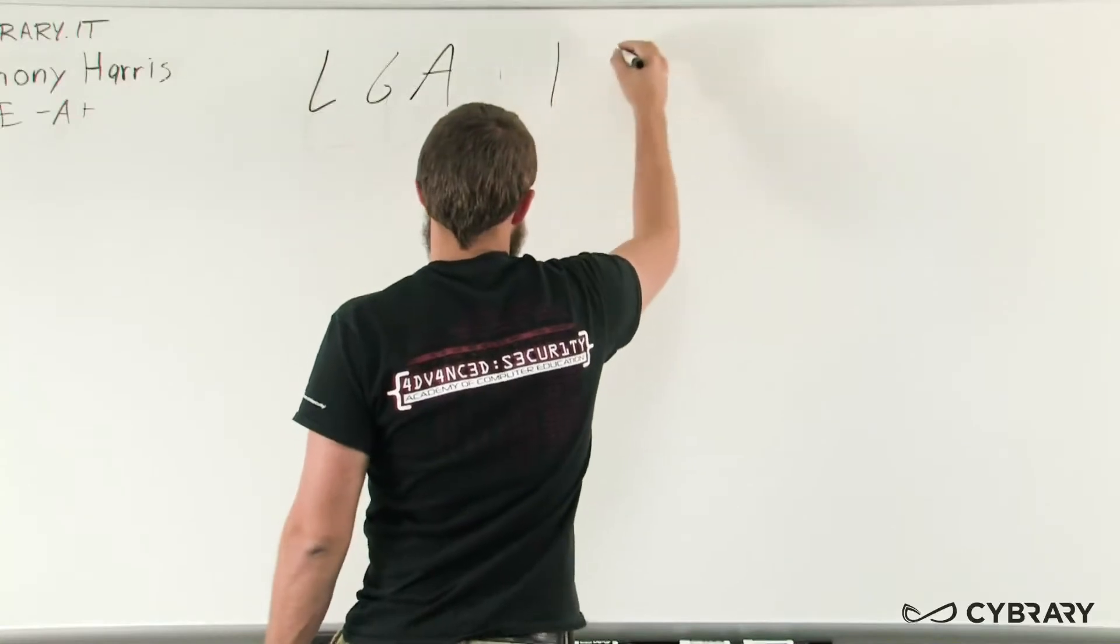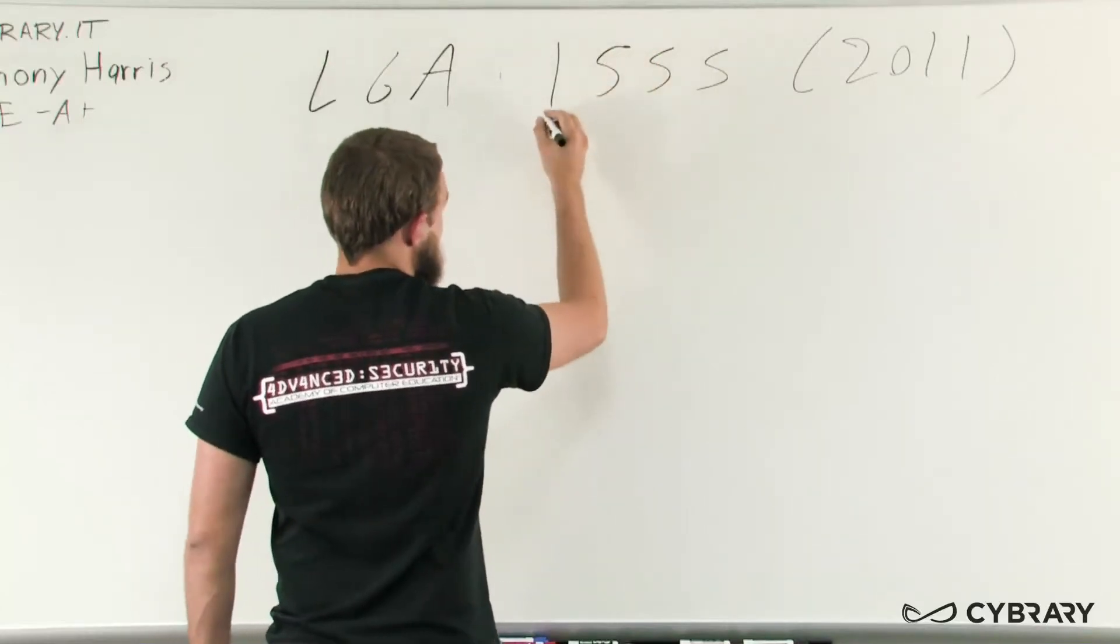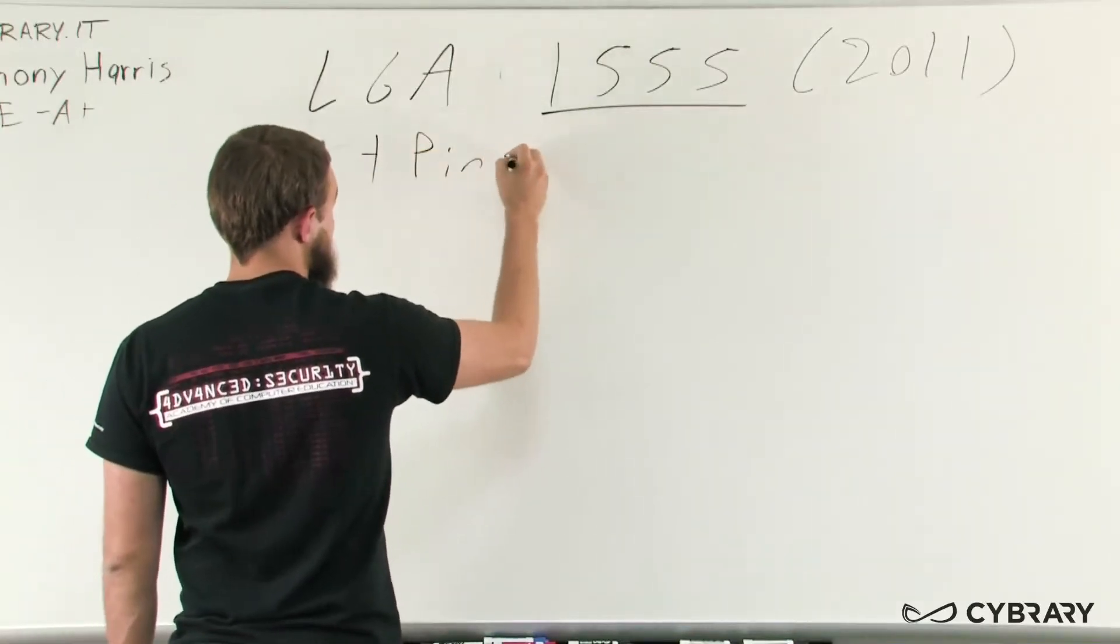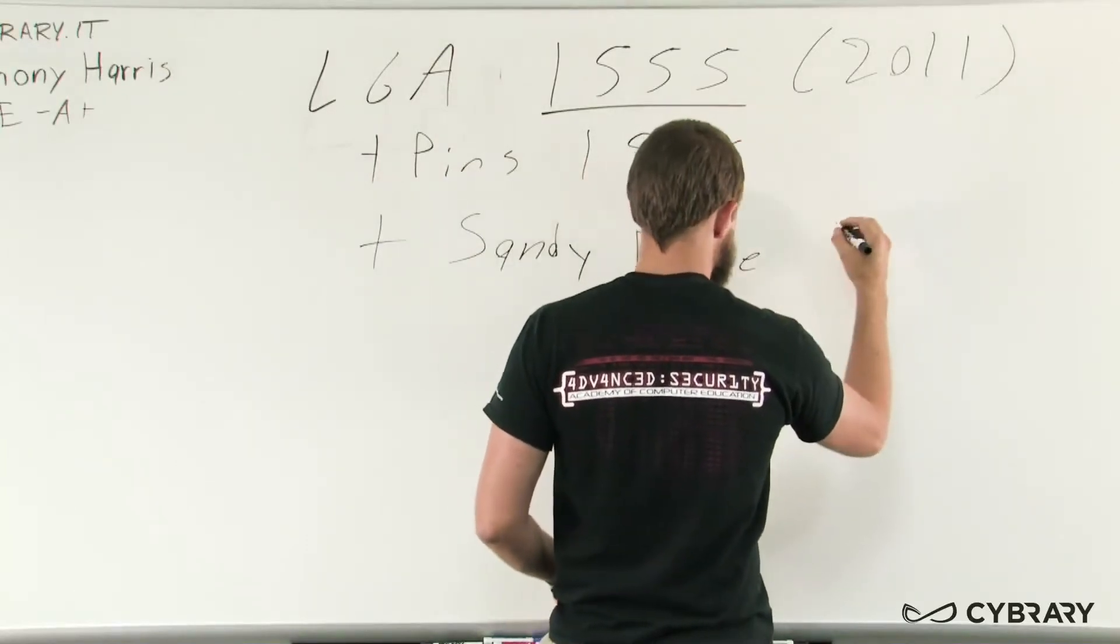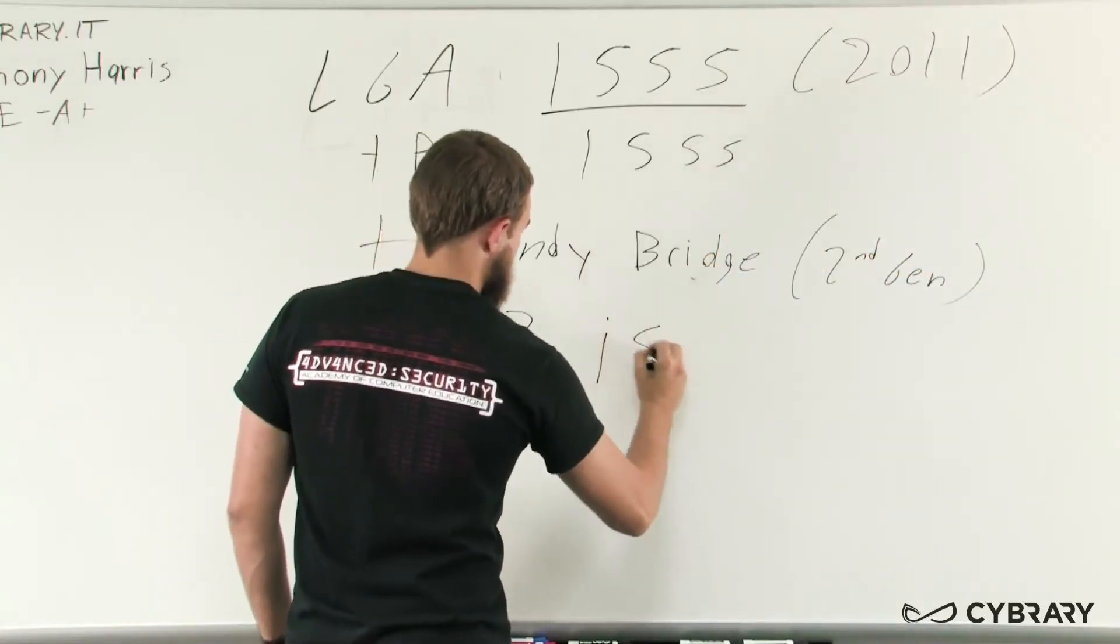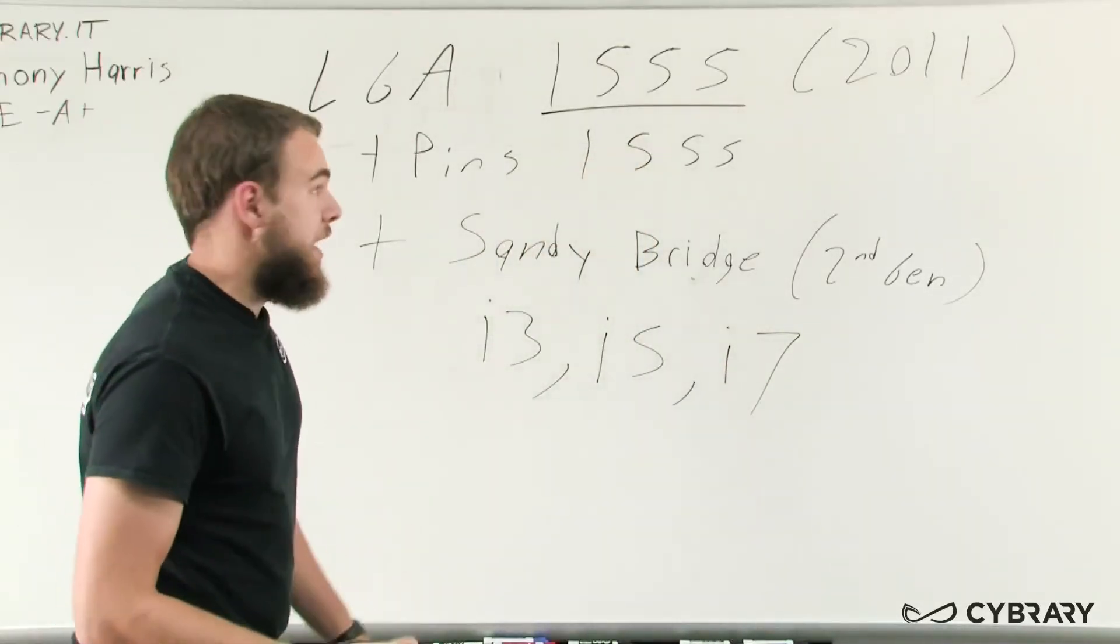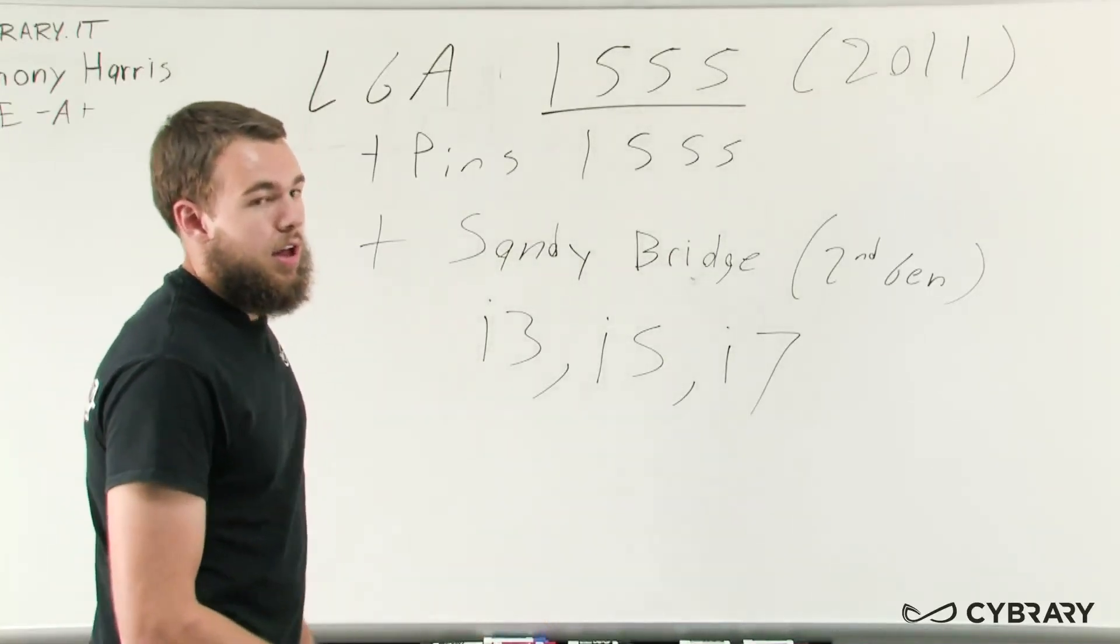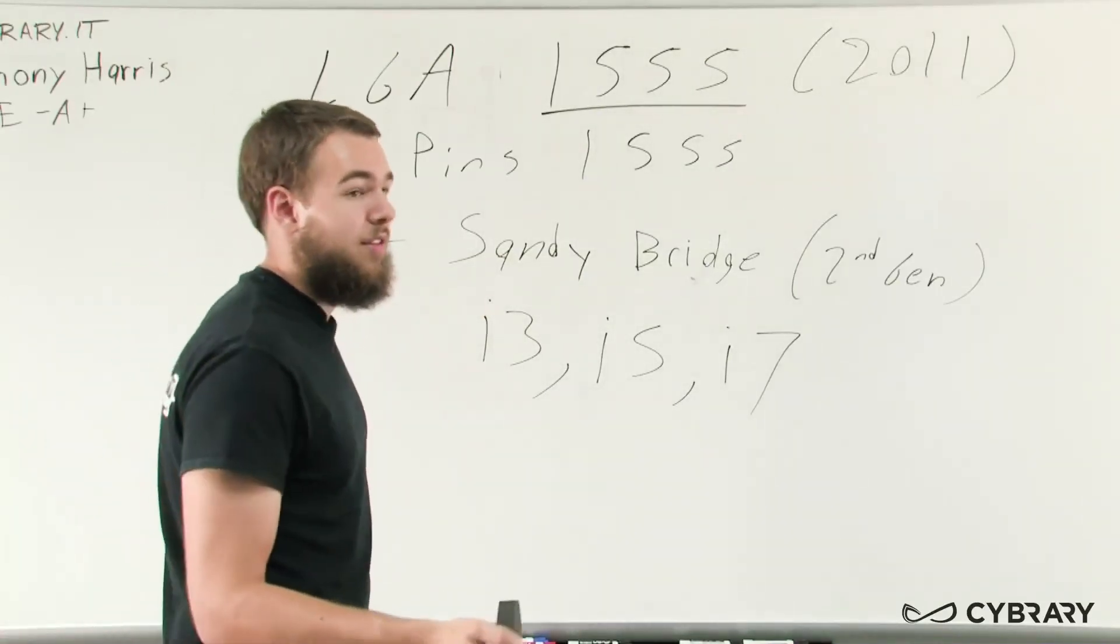For our next Intel processor socket type we're now at LGA-1555. This was released about 2011 and as our name helps us out our number of pins are at 1555. Some of the types of processors that we'll see using this socket are our second gen also known as our Sandy Bridge architecture Core i3s, i5s and i7s. So again LGA-1555 was about 2011, 1555 pins and we're going to be using second gen i3, i5 and i7 type processors on it.